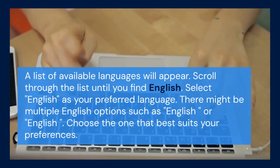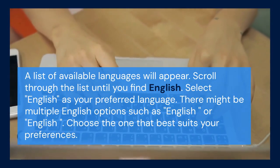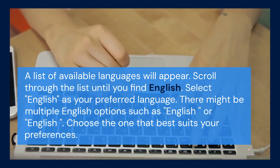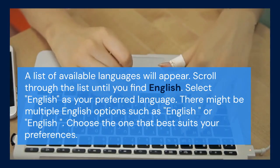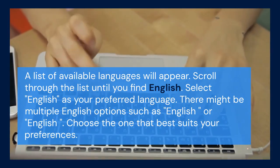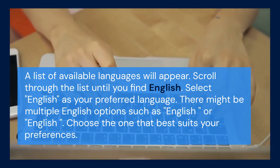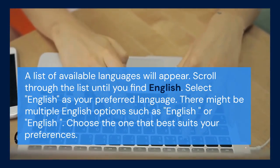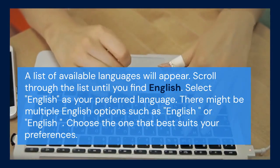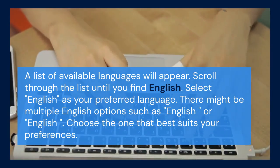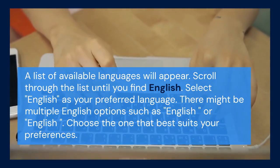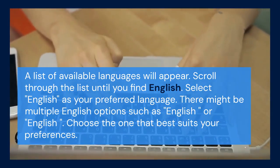Scroll through the list until you find English. Select English as your preferred language. There might be multiple English options, such as English, United States, or English, United Kingdom. Choose the one that best suits your preferences.